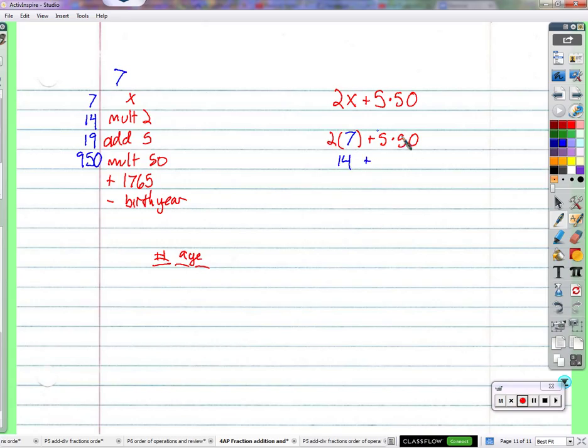Plus, well, 5 times 50, the order of operations that we agreed to would tell me to multiply these together first. So that's 250. So 250 plus 14 is 264. But I was supposed to be at 950 by now.